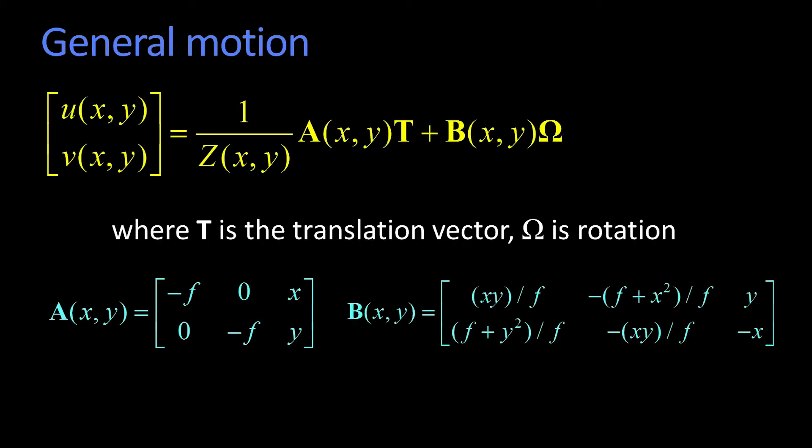So here I've rewritten it. This is the motion—u is how much it's moving at some point xy. We know the point xy in the image; the question is, how much motion are we seeing? We've got the u and the v, that's the motion in x and the motion in y.